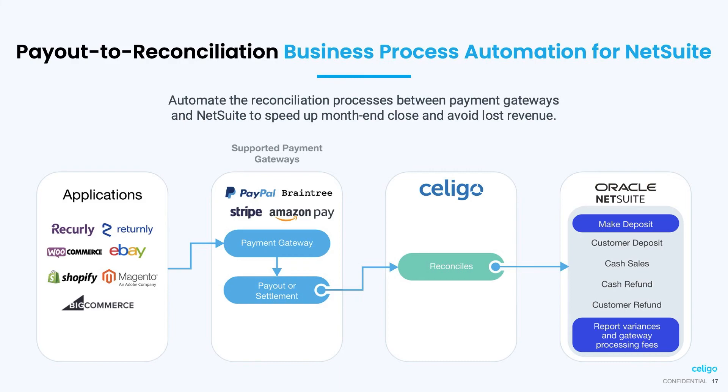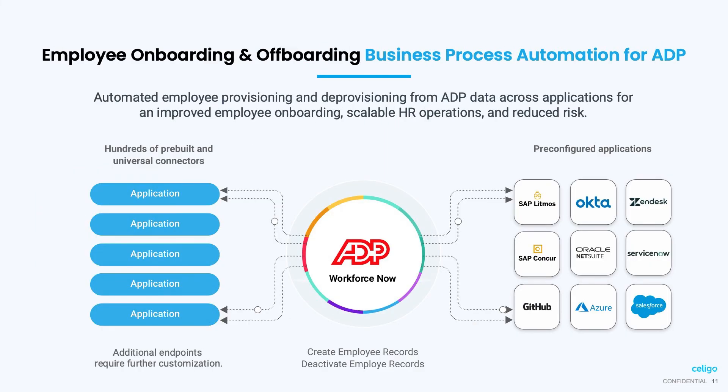For example, the Payout to Reconciliation Business Process Automation automates the collection of payouts data from your payment gateways and automatically reconciles it in your ERP, saving you hours of work and recovering potentially thousands of dollars in lost revenue.